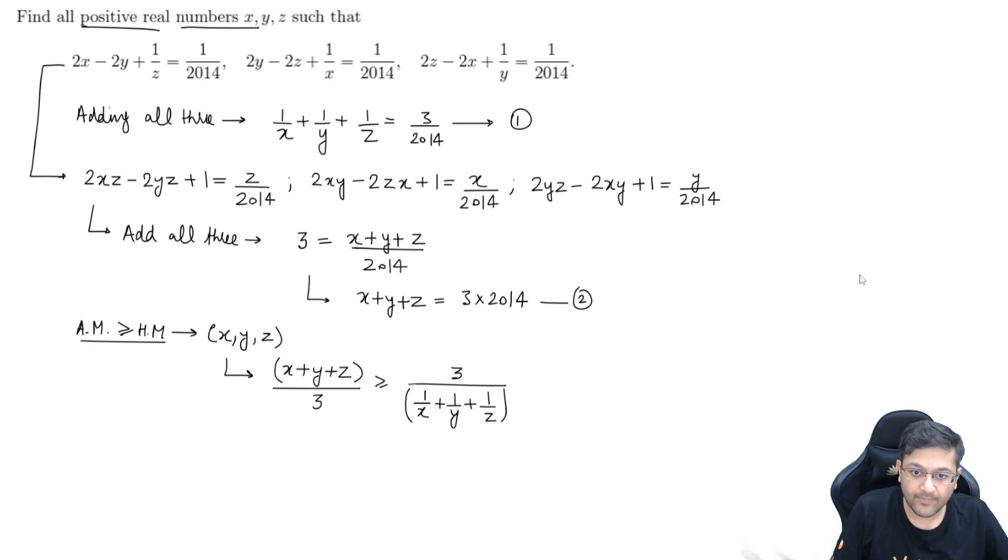Now, if you cross multiply, guys, after cross multiply, you will observe that you are getting x plus y plus z into 1 upon x plus 1 upon y plus 1 upon z is greater than equal to 9. Right. That I am getting greater than equal to 9. So, guys, if this product now is greater than equal to 9, but on the left hand side from equation number 1 and 2, if you look at them carefully, what is the actual product of those two terms on the left hand side?